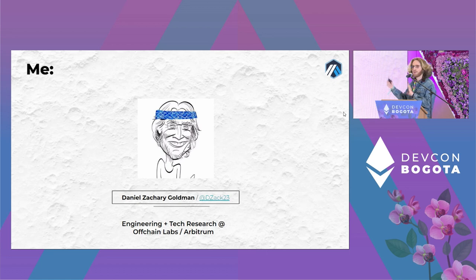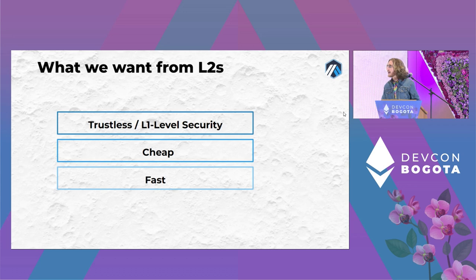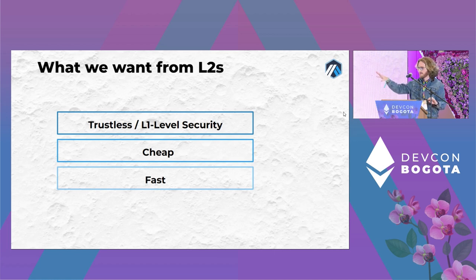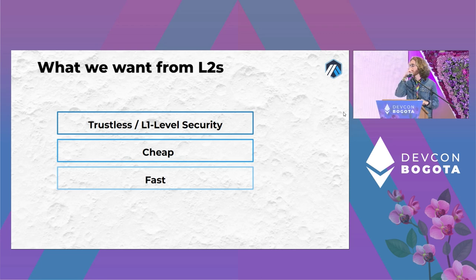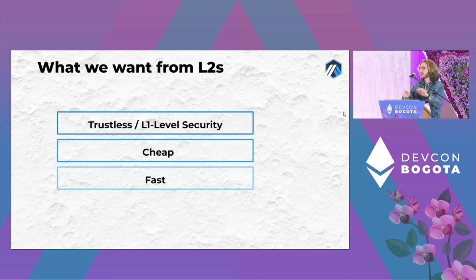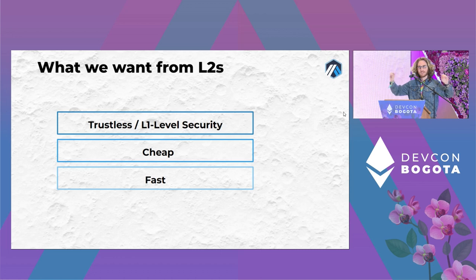I won't be focusing specifically on Arbitrum, but there'll be some Arbitrum perspective and bias. To get into the subject of sequencers, the fastest way to understand why we have them is to think about why we have layer twos to begin with. The baseline starting point: a layer two is trying to scale Ethereum while not introducing new trust assumptions — inheriting security from Ethereum.